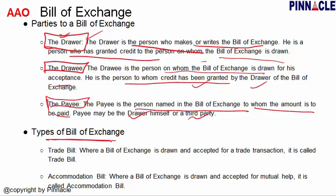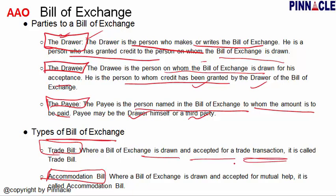There are two types of bill of exchange: one is Trade Bill and one is Accommodation Bill. A Trade Bill is where a bill of exchange is drawn and accepted for a trade transaction. When one person sells goods to another, the buyer agrees to pay a certain amount after a certain date. When he accepts that bill, it becomes a bill of exchange — this is a trade bill because it is made for a trade transaction.